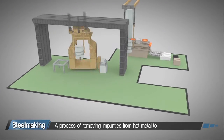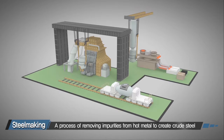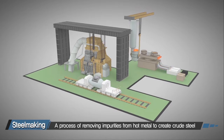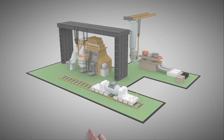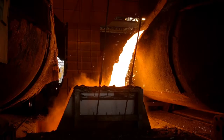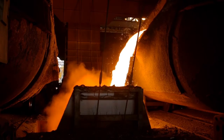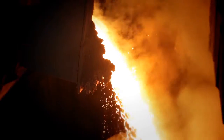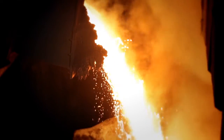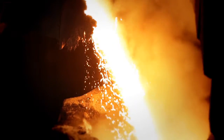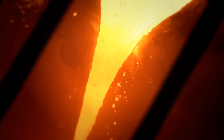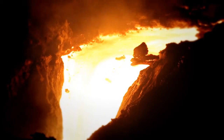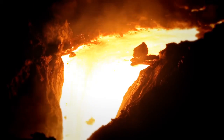The next step is the steelmaking process, where impurities are eliminated from the molten iron to produce crude steel. The molten iron created in the blast furnace contains various impurities that diminish its strength and durability once it is hardened to steel. Therefore, a process of removing the impurities while the molten iron is in liquid form is necessary.